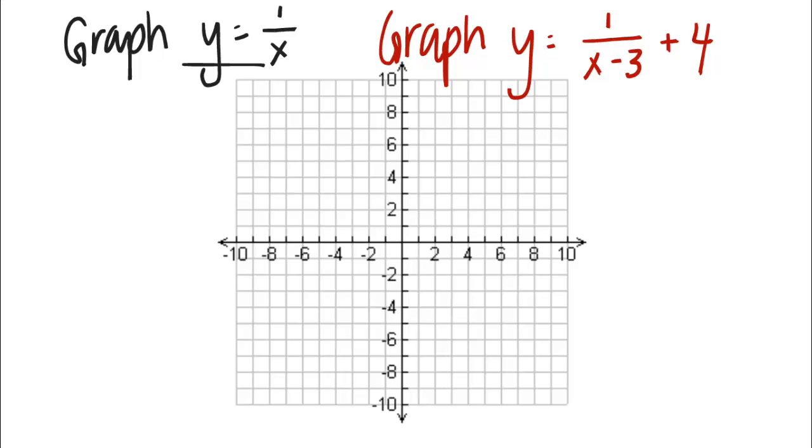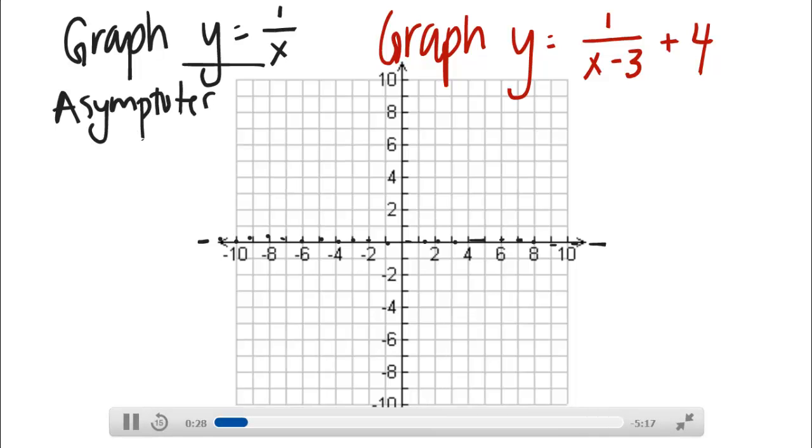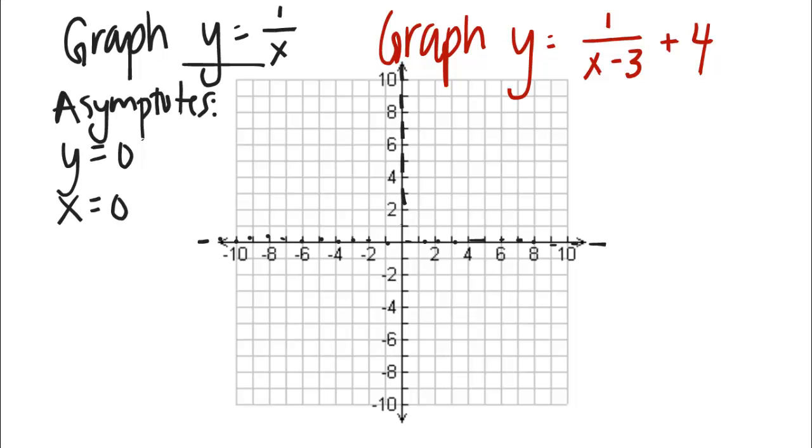Hopefully we remember from class that we have two asymptotes. We know as x is getting really large, y is approaching 0, which gives us a horizontal asymptote at y equals 0. So let me just list the asymptotes here. If we also think about what numbers we can and cannot plug in for x, we realize that there's a vertical asymptote at x equals 0. x equals 0 is not in the domain for our function y equals 1 over x.